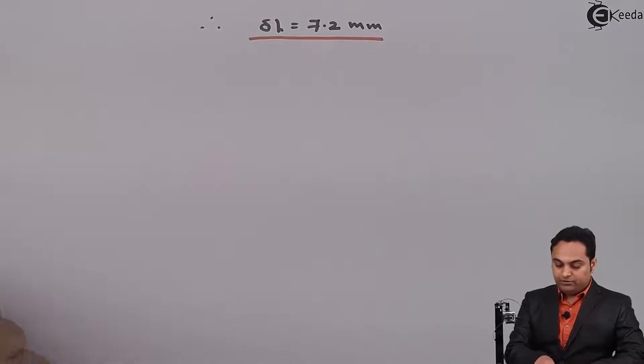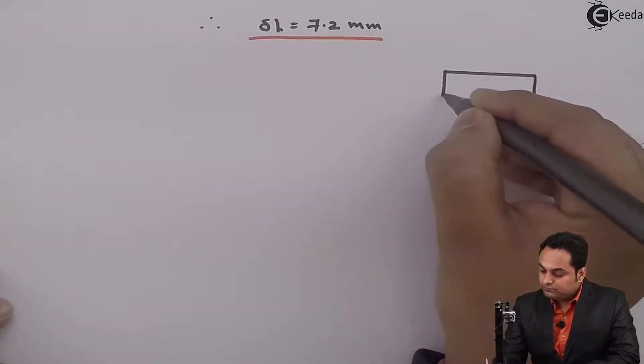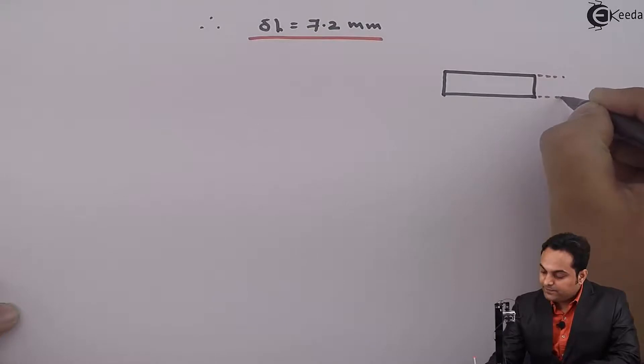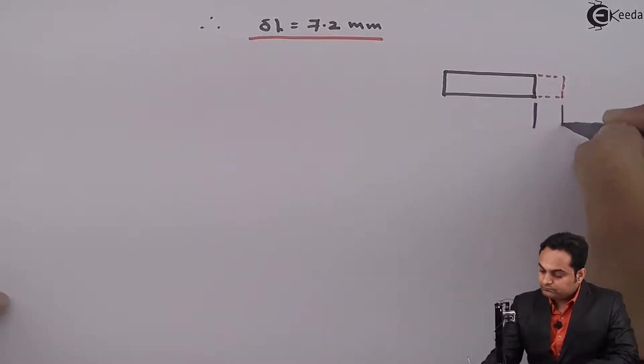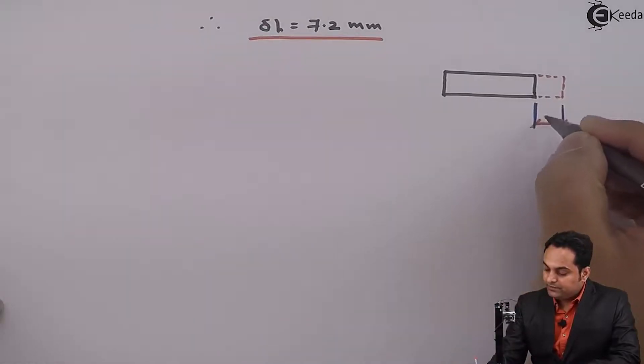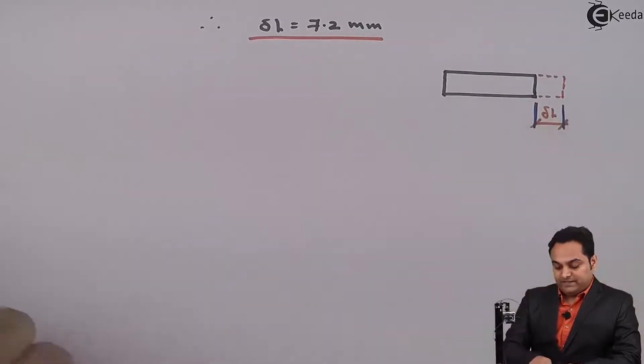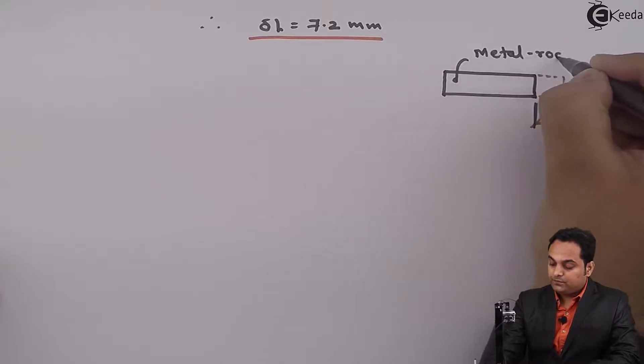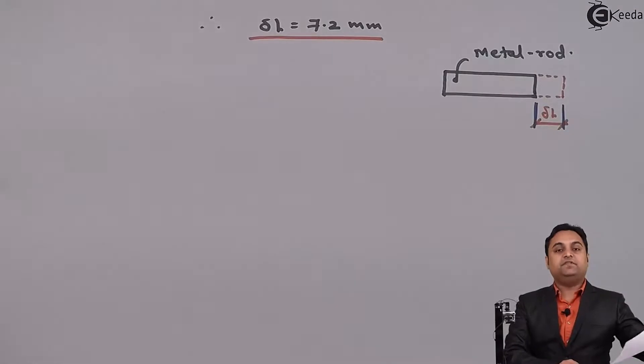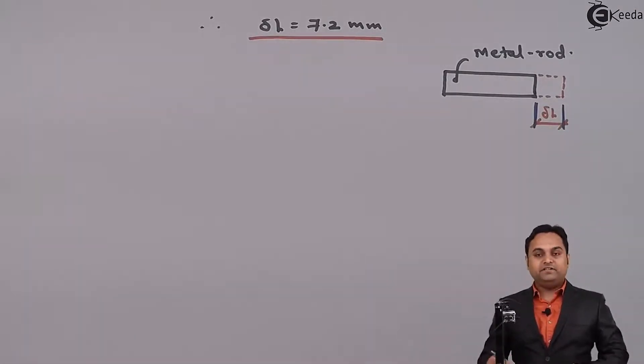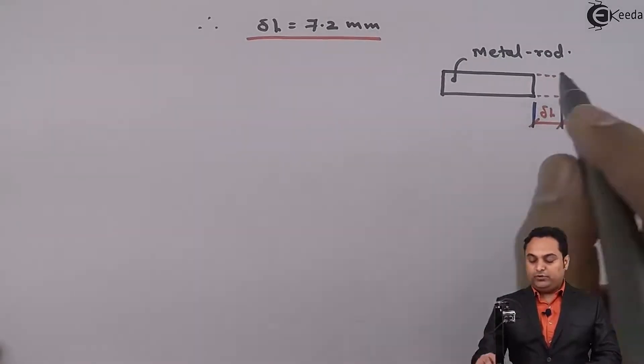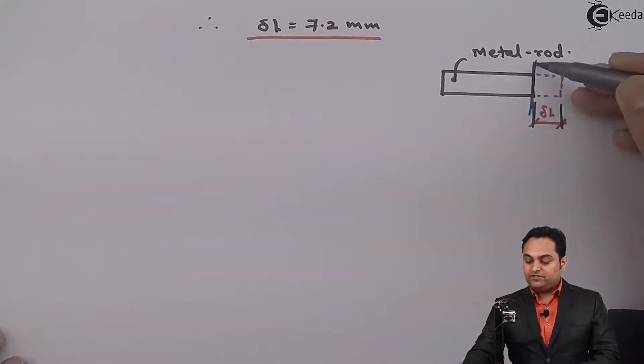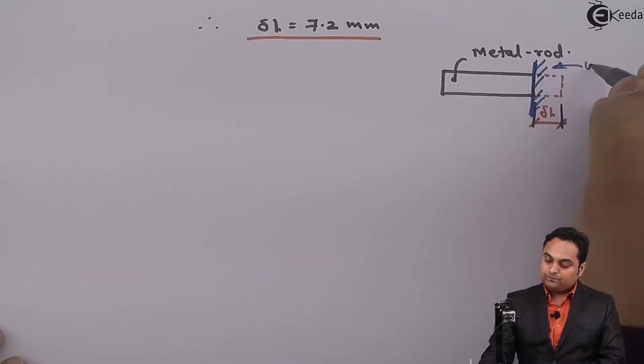So, the metal rod, I am just drawing the diagram to explain this in a more effective manner. It will freely expand and this value is delta L. Now, if the free expansion of this metal rod, it is given in the problem that the free expansion is prevented. So, when we are preventing the free expansion, it means we are not allowing this metal rod to expand to 7.2 mm because of the change in temperature. It means suppose the free expansion is prevented by having a wall here.